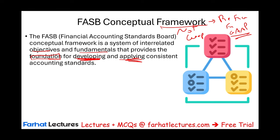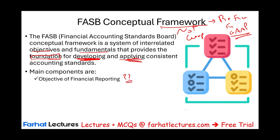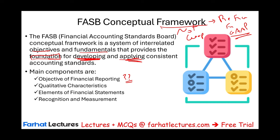These are the main ideas of the framework — this is how we should create the rules. When creating rules, you have to keep a few things in mind by following the reference. First, what is the objective of financial reporting? Second, what are some qualitative characteristics? Third, the elements of financial statements define what goes on the financial statements. And fourth, recognition and measurement. Those are the main components of the conceptual framework.